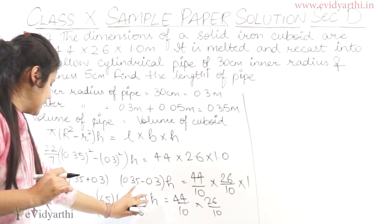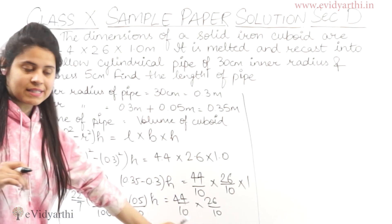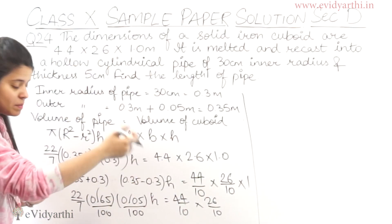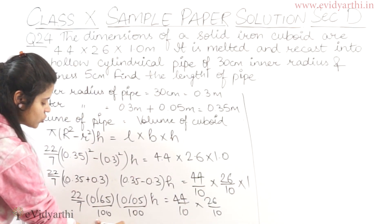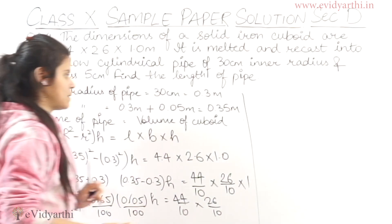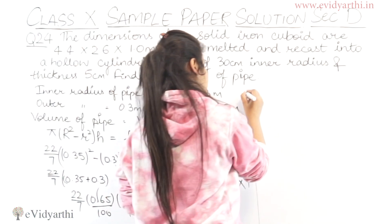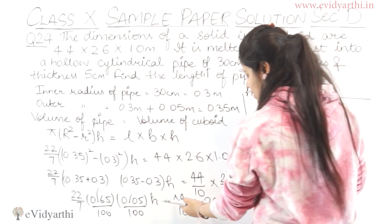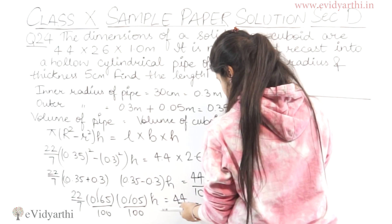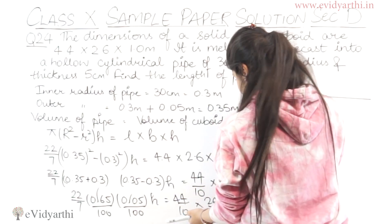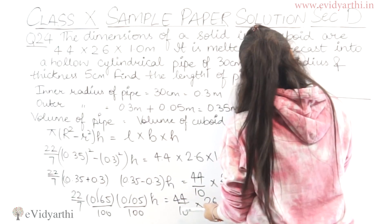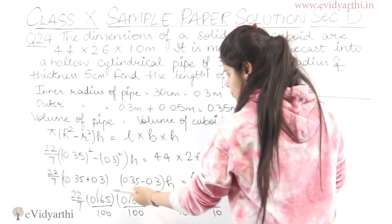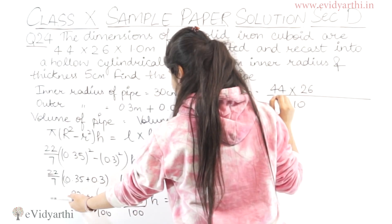We need to find h, so we rearrange by moving all other terms to the right side. Numerator terms from the left side move to the denominator on the right, and denominator terms move to the numerator. So h = (44 × 26) / (10 × 10) on the top, divided by (22/7) × (65/100) × (5/100).